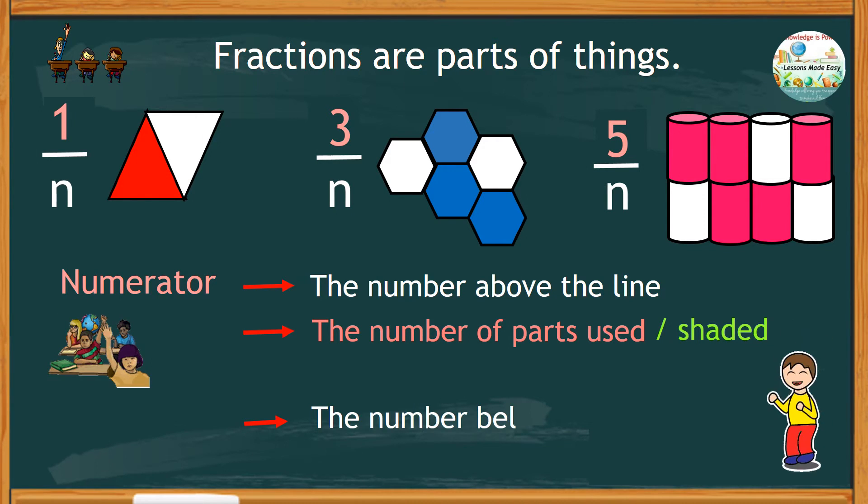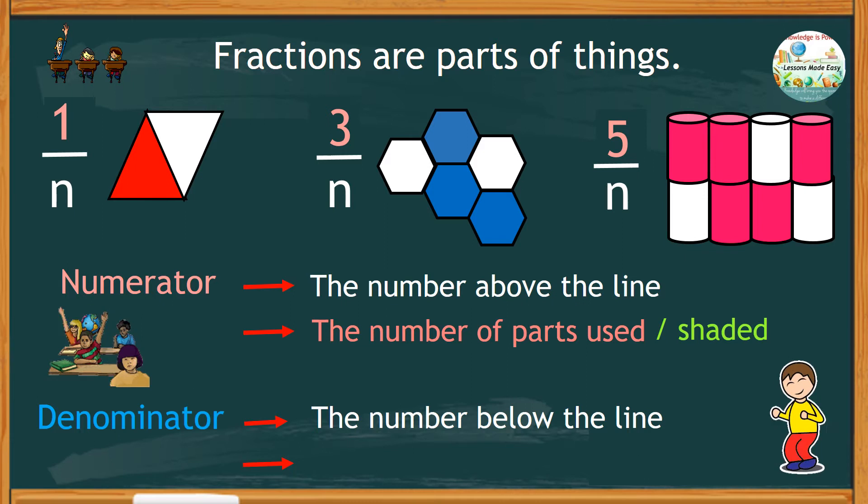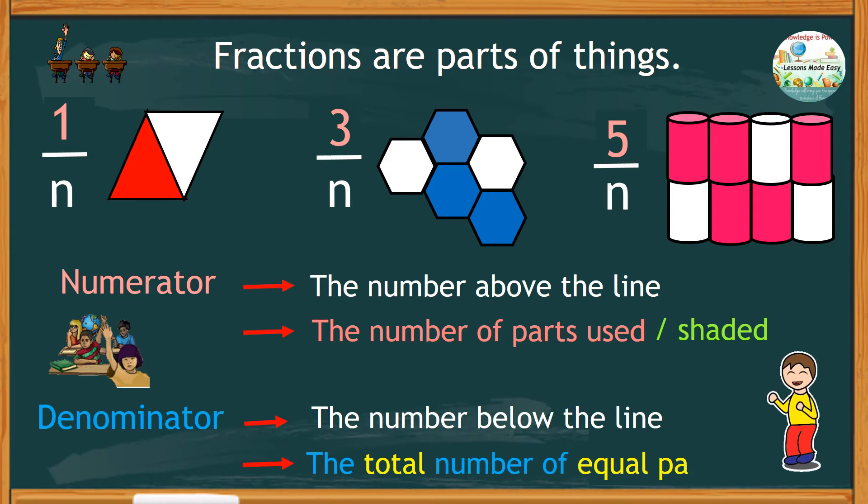The number below is called the denominator. It tells the total number of equal parts the whole thing is divided into. The first figure shows two equal parts.